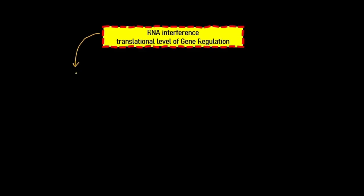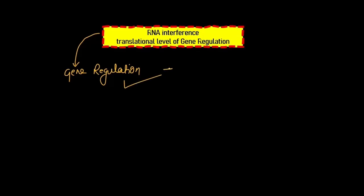So what is RNA interference? RNA interference is a type of gene regulation. And talking about gene regulation, there are different levels of gene regulation, right? Your transcriptional level,